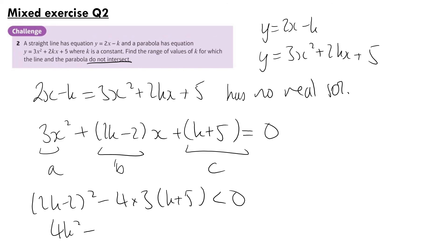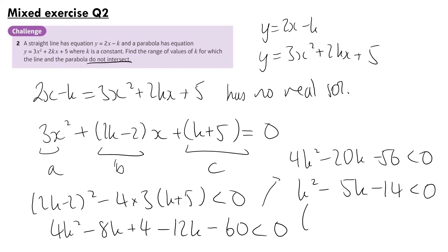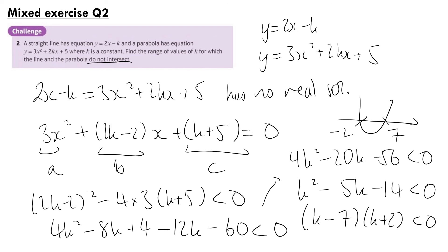For no real solutions, the discriminant b squared minus 4ac must be less than 0. So 4(k minus 1)² minus 12(k plus 5) is less than 0, giving 4k² minus 8k plus 4 minus 12k minus 60 is less than 0, so 4k² minus 20k minus 56 is less than 0, and therefore k² minus 5k minus 14 is less than 0. Factorising: (k minus 7)(k plus 2) is less than 0, so minus 2 is less than k is less than 7. That is our final answer, and the end of the Chapter 3 challenge questions.